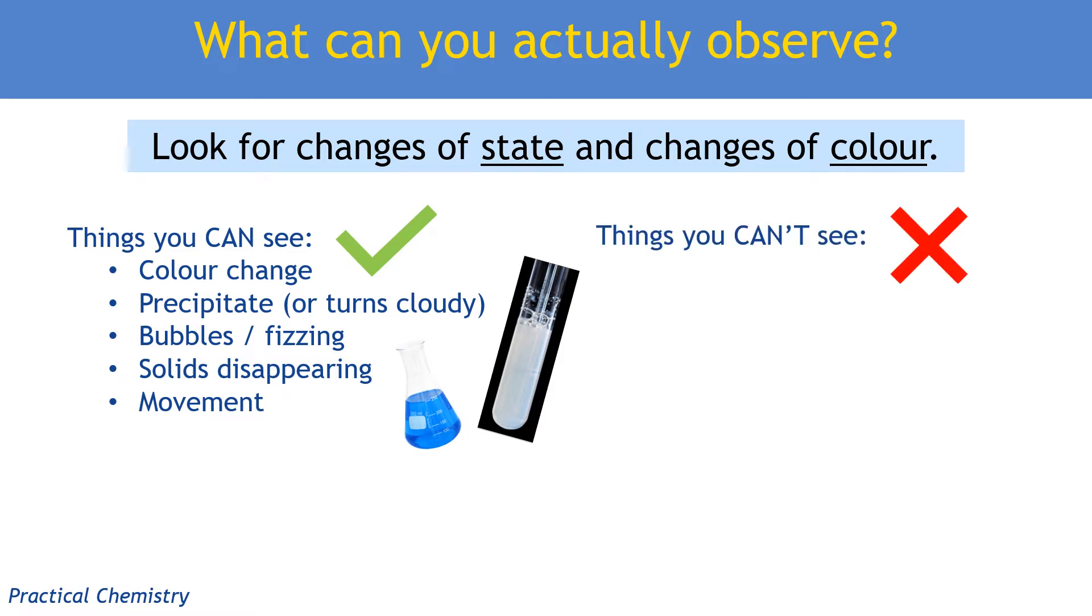What can you not see and therefore you shouldn't put if they're asking you for an observation? This is probably the number one one that students say, which is gas given off. Now I'm talking at the moment, but no one can see the gas coming out of my mouth. You can't see a gas unless it's coming off in a solution and is bubbling at the same time.